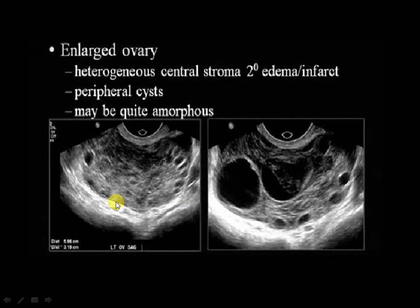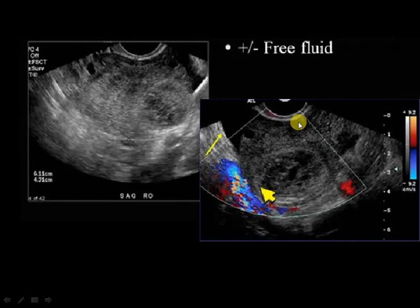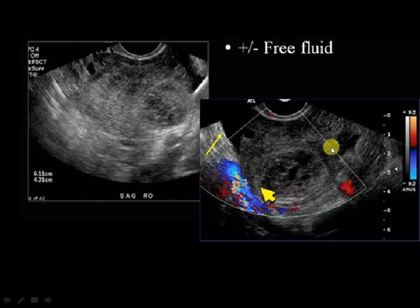On grayscale ultrasound, the ovary appears large, heterogeneous, with multiple peripheral cysts and can be amorphous. The ovary may be seen in the midline rather than in the right or left side. Check for an underlying mass as the cause of torsion. Asymmetric thickening of an ovarian cyst wall with a dilated tube forms what is called a target sign. The enlarged ovary is avascular — with Doppler you cannot see any internal vascularity, similar to testicular torsion.